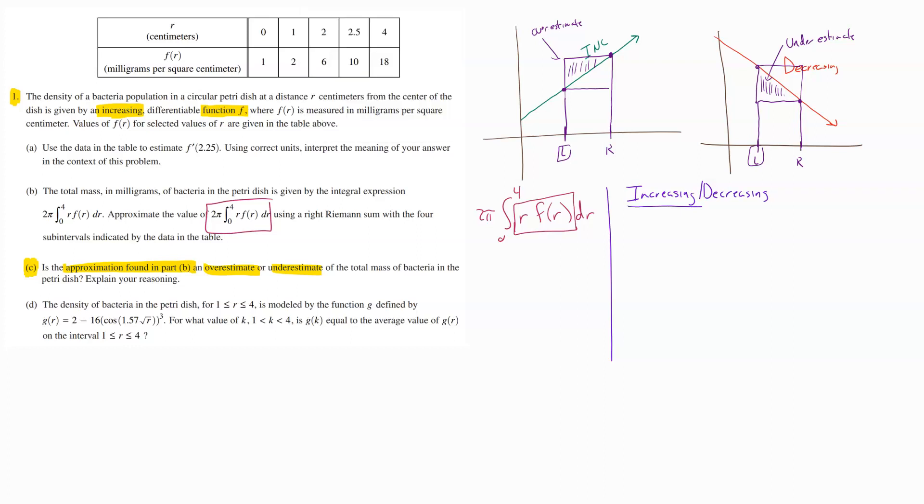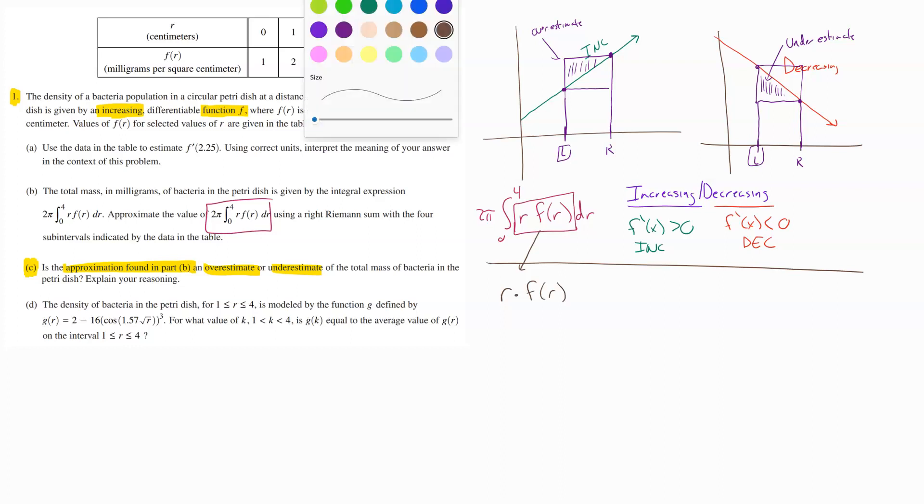We can tell if something is increasing or decreasing by the value of our first derivative. If we end up with a first derivative that is positive, if our f prime of x is greater than 0, that tells us that it is increasing. And if our derivative value is negative, if we've got an f prime of x that's less than 0, then that tells us that our graph is decreasing. Well, now what we do then is just kind of follow that logic. And we say, what's happening in our situation here?